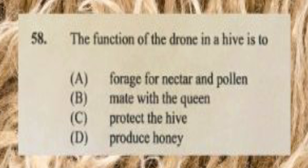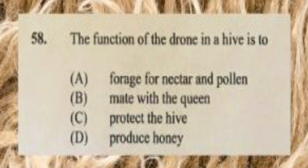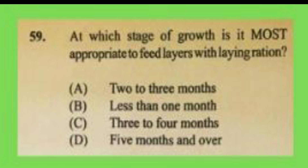Question number fifty-eight: the function of a drone in a hive is to A) forage for nectar and pollen, B) mate with the queen, C) protect the hive, D) produce honey. The answer is B, mate with the queen. The drone is the male bee whose only function is to mate with the queen — he has no other function in the hive.